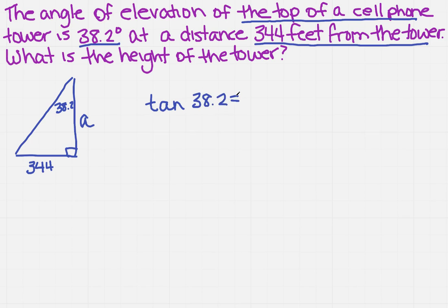That will equal a over 344, the side opposite over the side adjacent. So how do I solve that? I multiply both sides by the 344, which gives me this. Now when I have that, how am I going to enter that in my calculator?